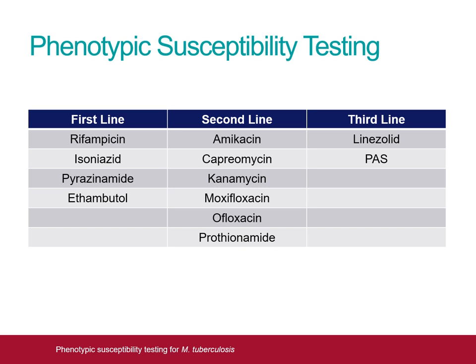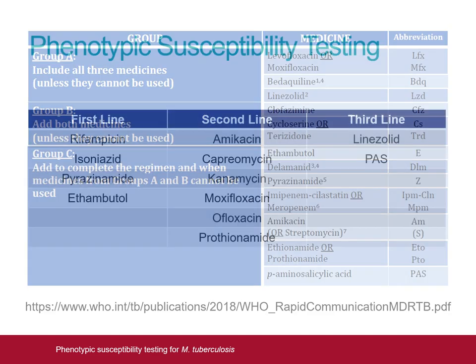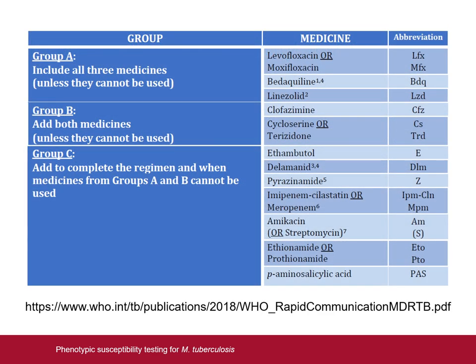However, the classification of anti-tuberculous agents has changed several times over the past few years. At the time of recording, the most up to date guidance is that published by the WHO in late 2018. This new approach to drug classification, as well as advances in WGS drug susceptibility prediction, have allowed the NMRS to replace the previous hierarchical approach to phenotypic testing with a new, more contemporary algorithm.